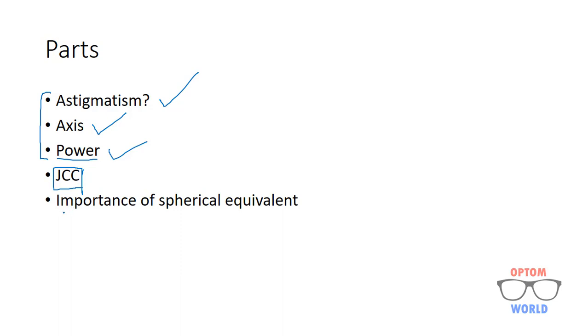And then lastly, a very important concept: the importance of spherical equivalent. Whenever you add cylindrical lenses during subjective refraction, you have to change your BVS accordingly. You are doing this to control the patient's accommodation.